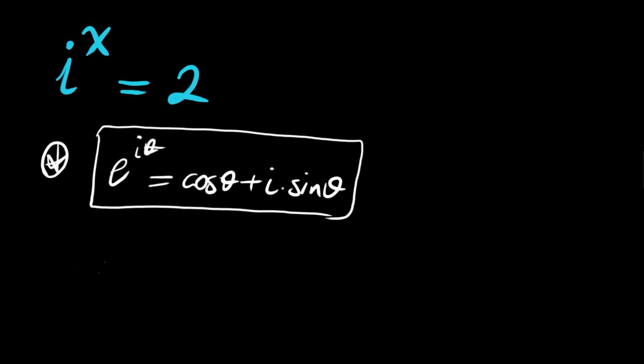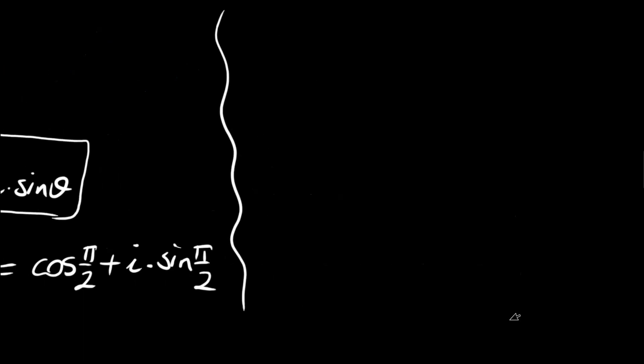Now our complex number here, i, the complex unit, is equal to zero plus i times one. Zero is cosine pi over two and one is sine pi over two, principally. So i is equal to e to the power i times pi over two.